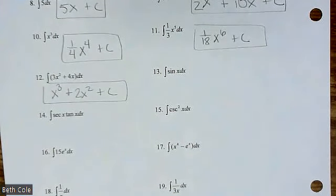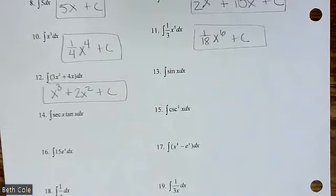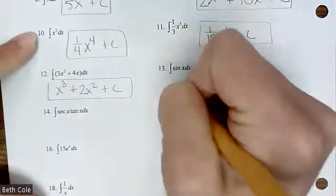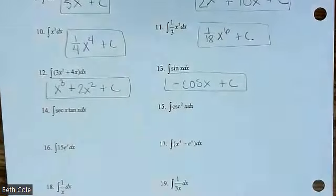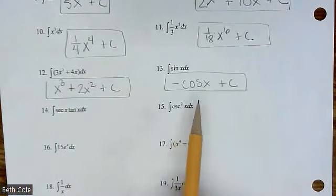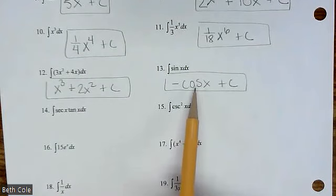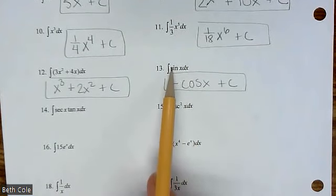Now we're getting into the trig. You need a function that if you did the derivative, you would get sine. Think about it. It is negative cosine of x plus c. The reason it's negative is because the derivative of cosine is negative sine. But we want it to be positive sine.